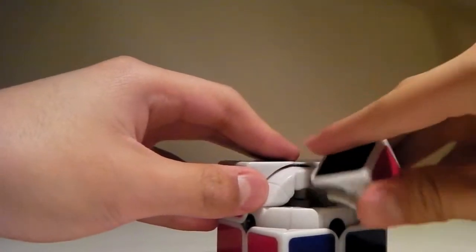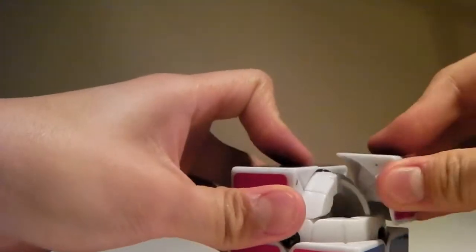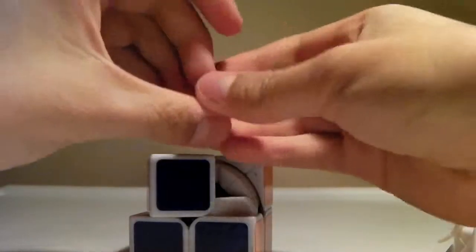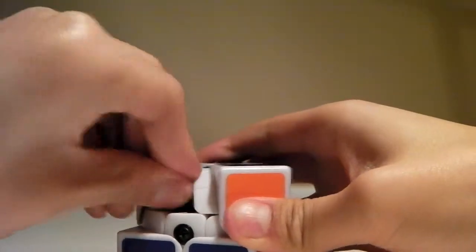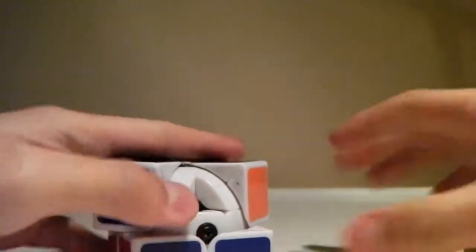Lastly, you put in the second last corner, put in the last internal piece, and do the exact opposite of what you did in the very beginning. Instead of twisting the corner out, just twist it back in.